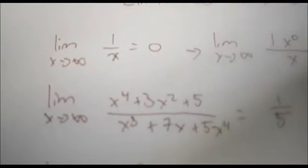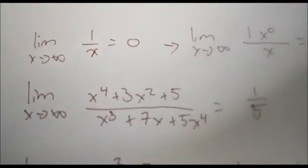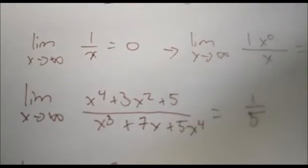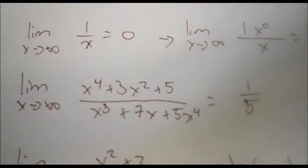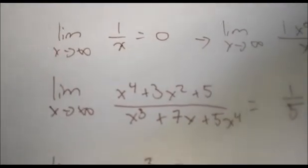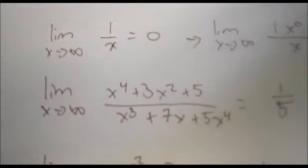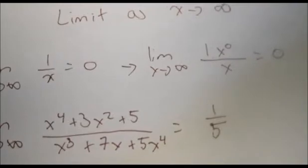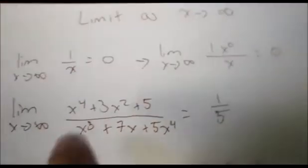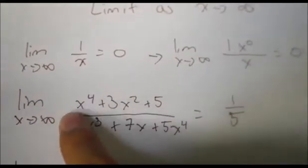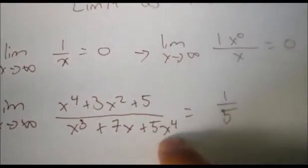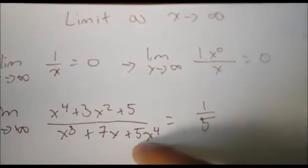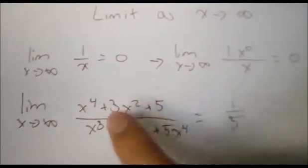In the next example, when the greatest power of both the numerator and the denominator are the same, the limit as x approaches infinity will be the ratio of its coefficients. Here, x to the fourth has a coefficient of 1 in the numerator, and 5x to the fourth has a coefficient of 5, so the answer will be 1 over 5.